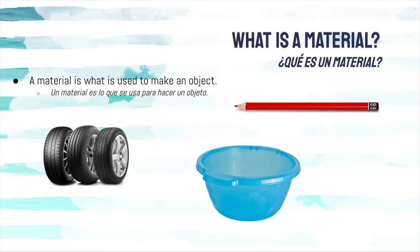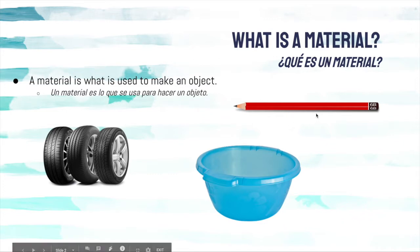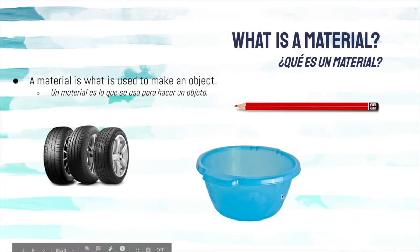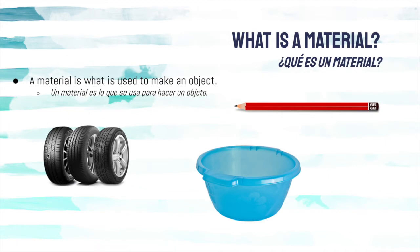The word material is not very specific, but it just means what is used to make another object. For example, the material that this pencil is made out of is wood, the material that this bowl is made out of is plastic, and the materials that these tires are made out of are rubber and metal.